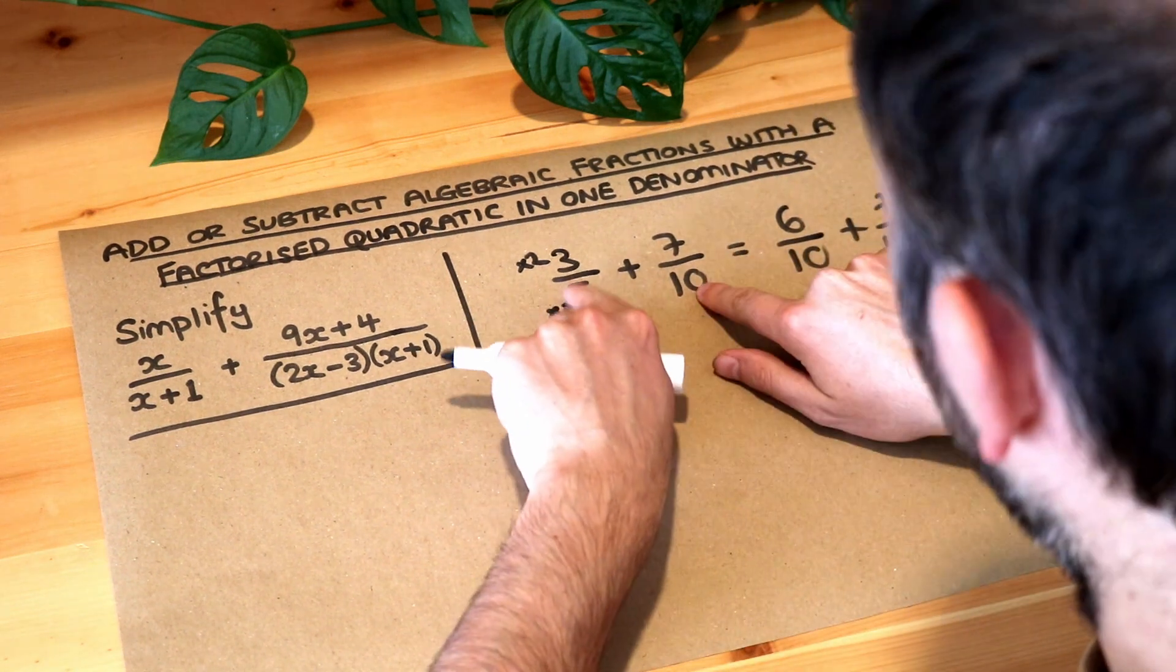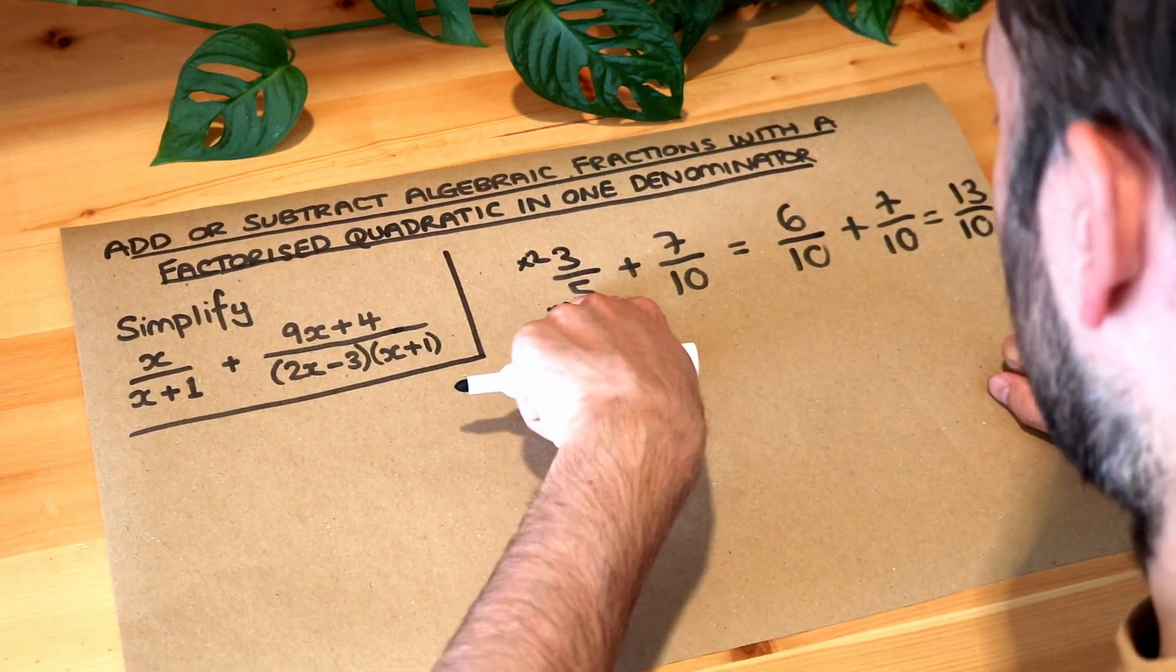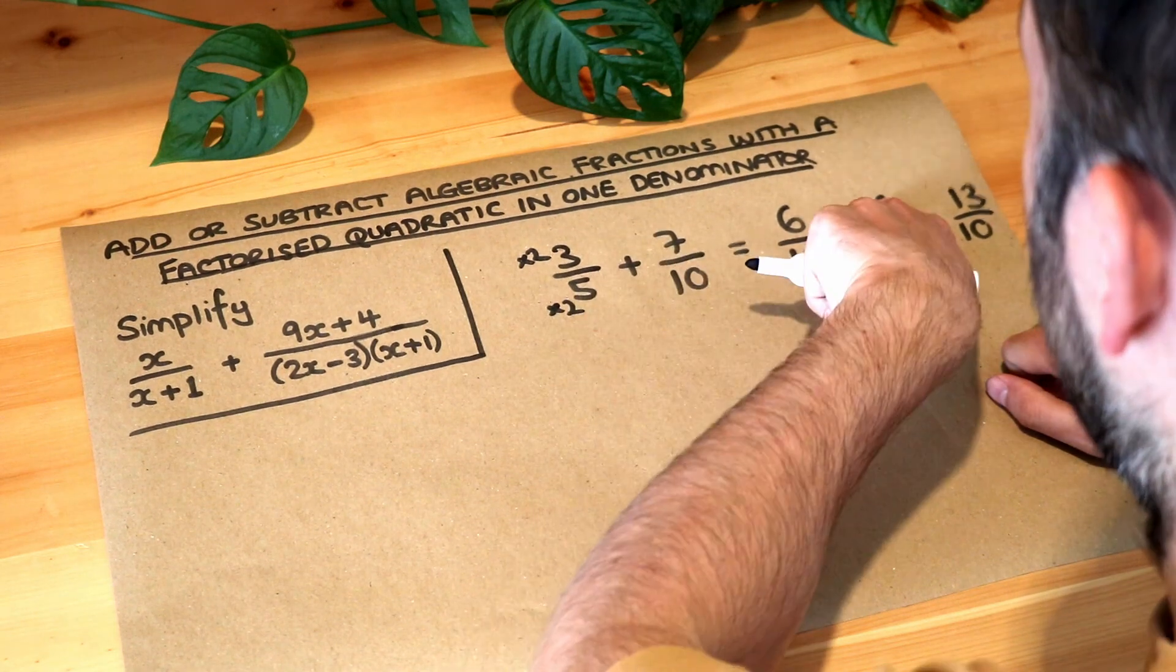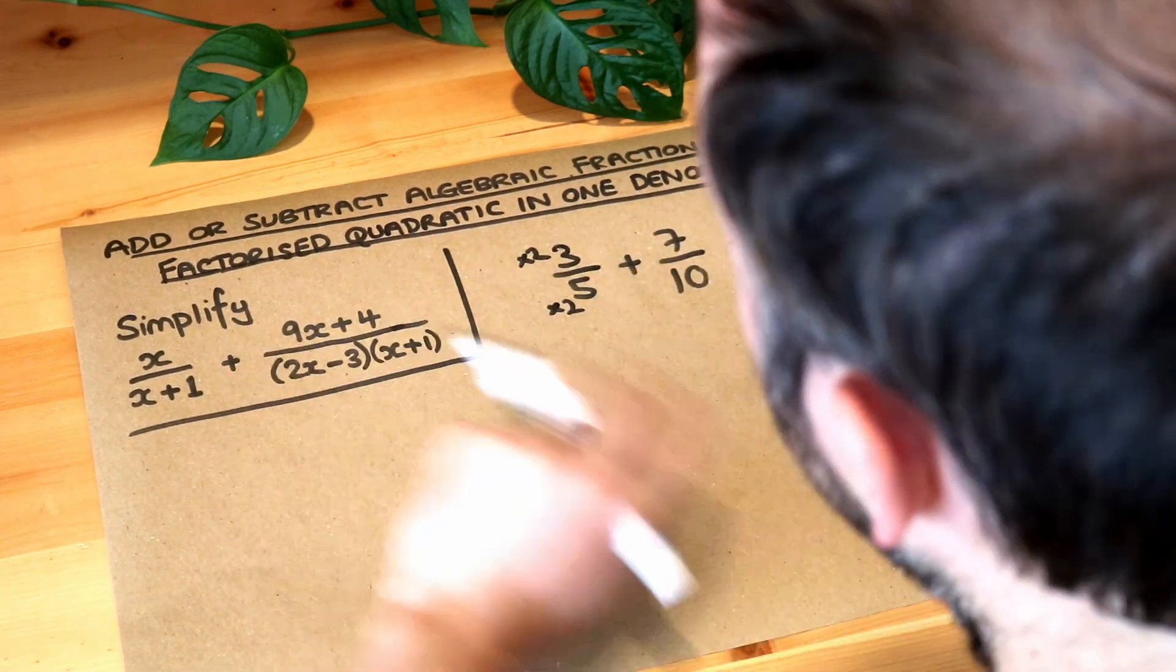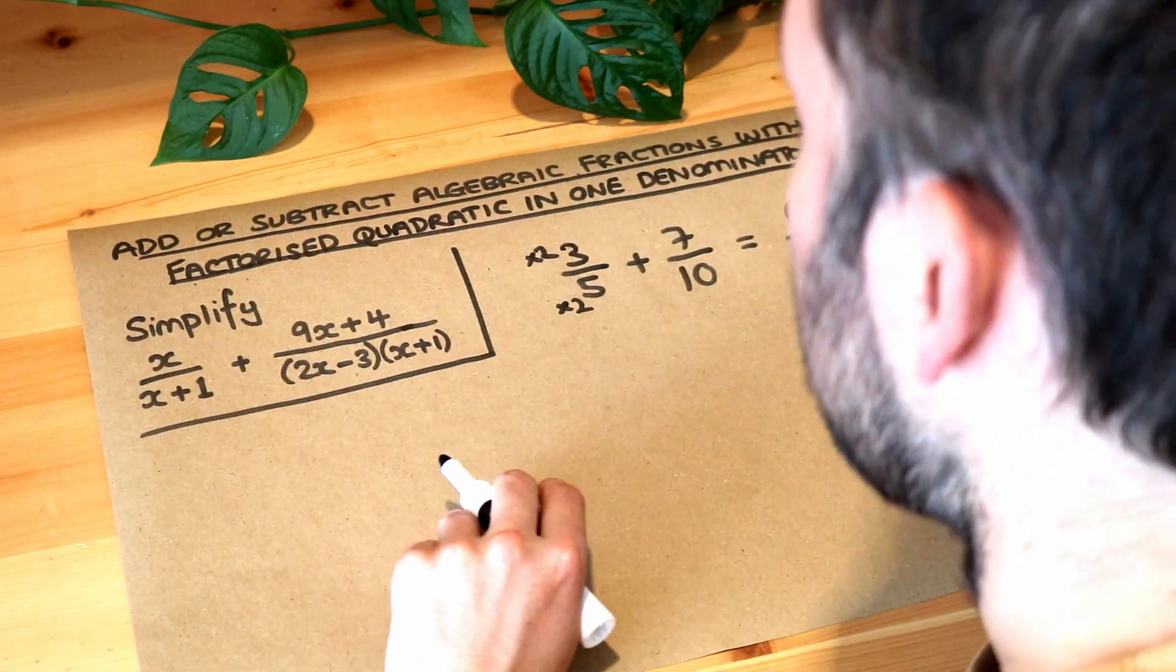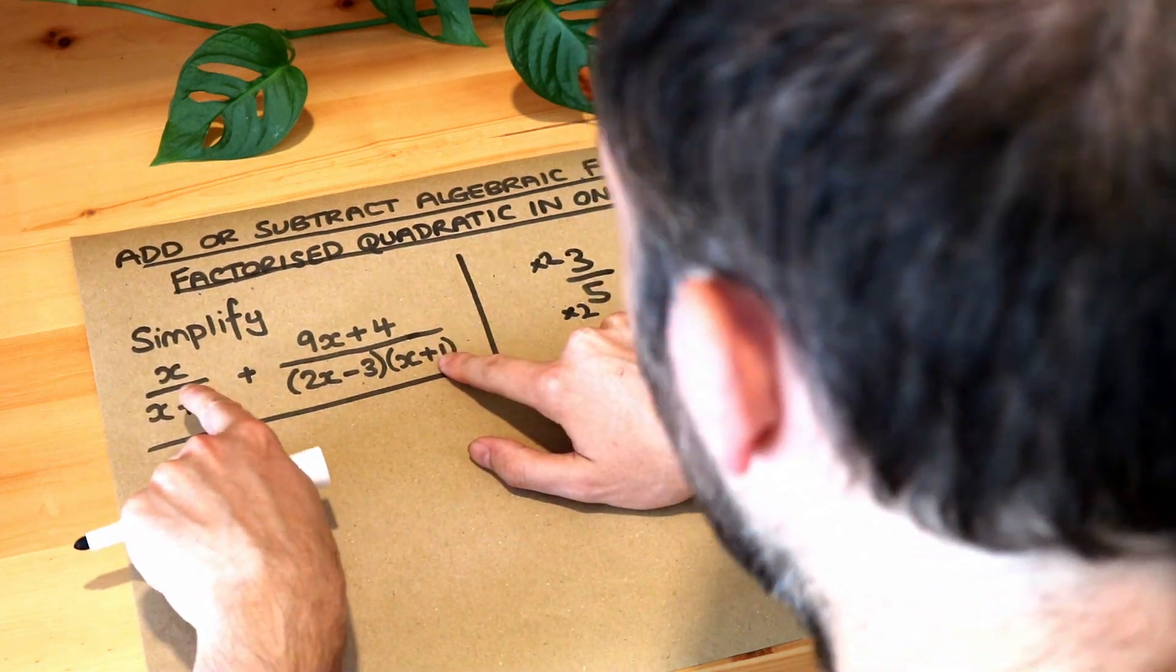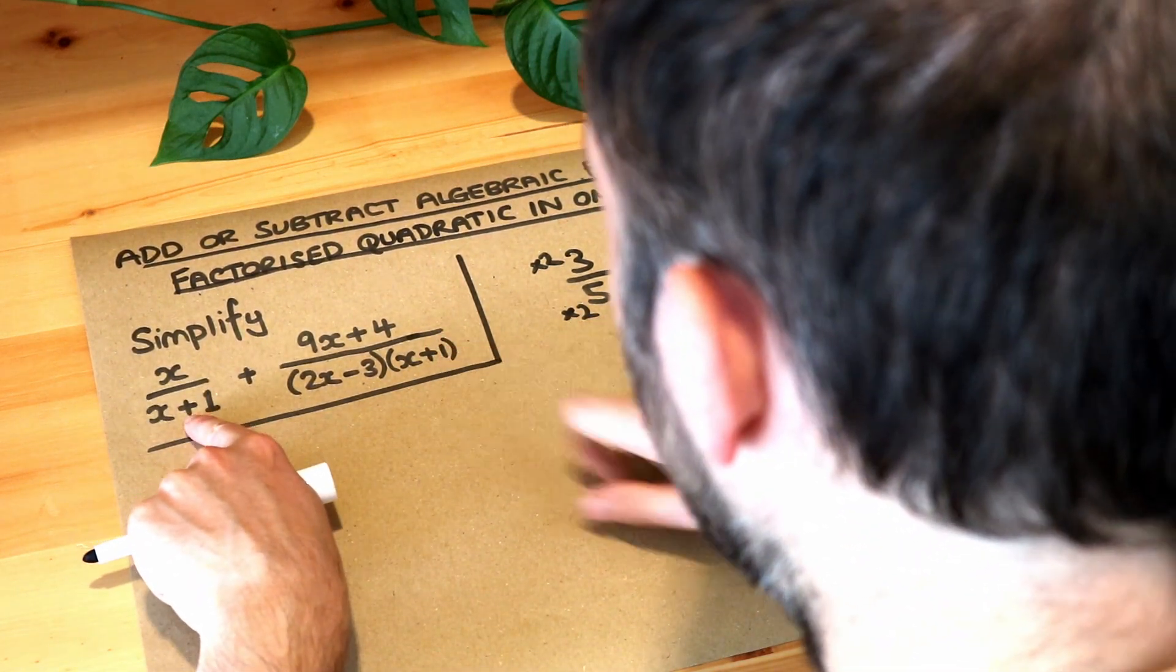So notice we didn't have to change both fractions here we only had to change the first fraction we left the 7 tenths as it was and that's the case here as well because we already have a factor of x plus 1 in common in both of these denominators.